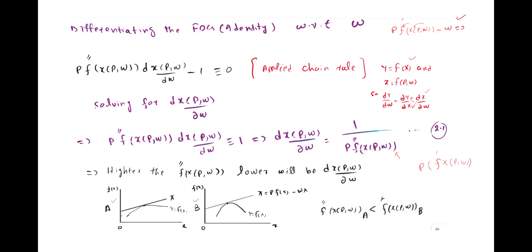This can be seen in the two panels: Panel A has a lower curvature in the production function, while Panel B has a higher curvature. Therefore, p·f''(x) is higher in Panel B compared to Panel A. This curvature reflects the rate of change in marginal productivity or marginal revenue of the firm. The first inference from the comparative statics is that a change in input prices influences the rate of change of marginal productivity of the firm.